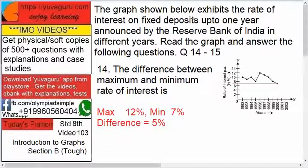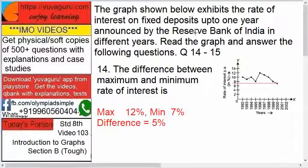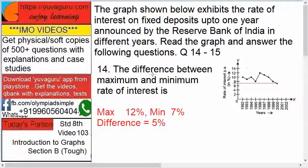RBI — Reserve Bank of India — is a controlling body for all the banks in India. It sets the rules and regulations, and all banks have to follow it. Now, let's go to the question: the difference between the maximum and minimum rate of interest.